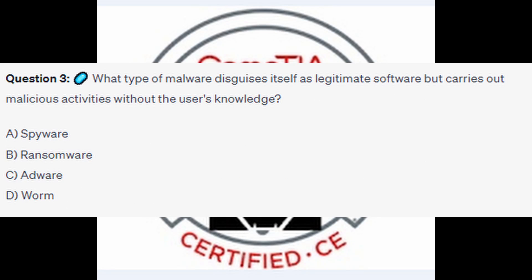Question number 3: What type of malware disguises itself as legitimate software but carries out malicious activities without the user's knowledge? Is it A Spyware, is it B Ransomware, is it C Adware, or is it D Worm?